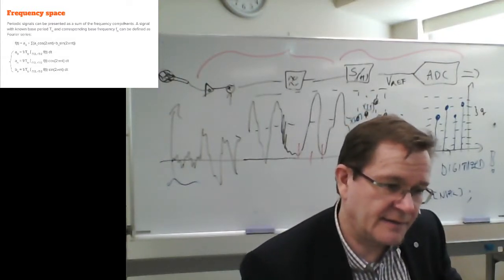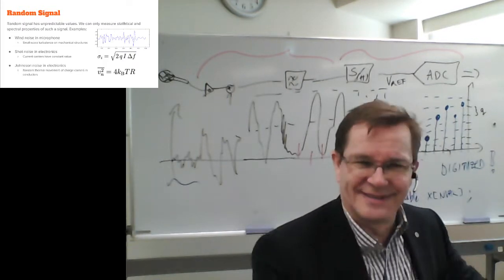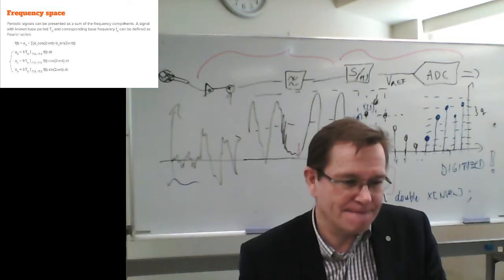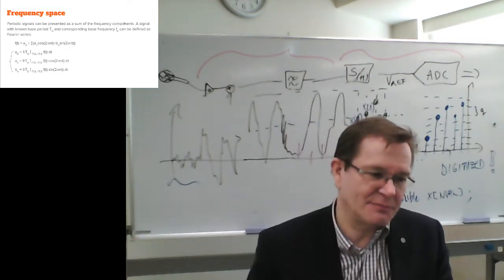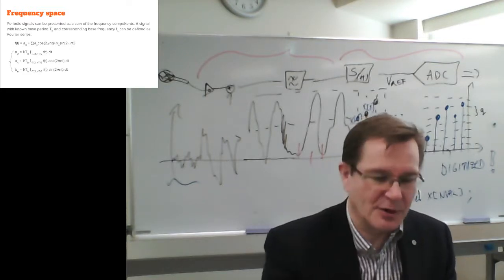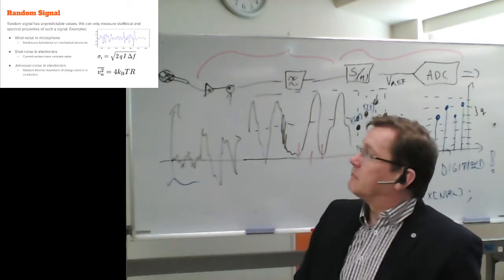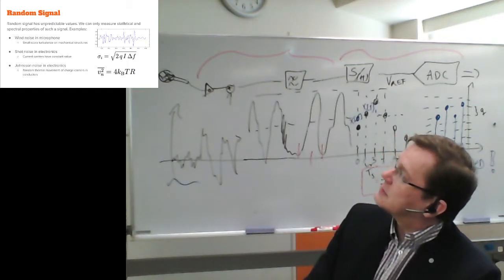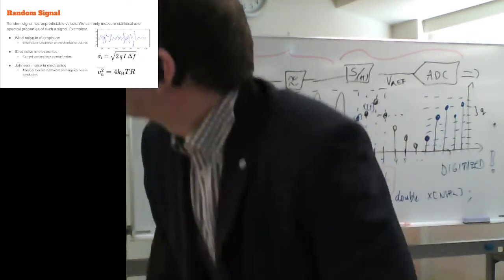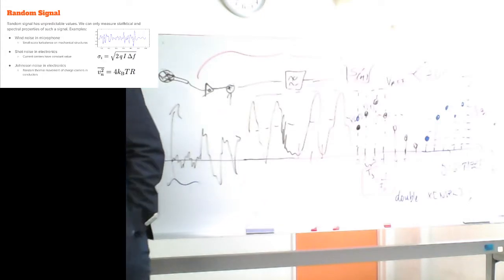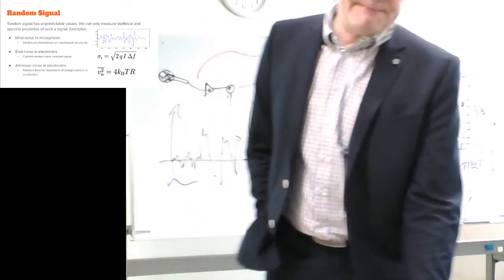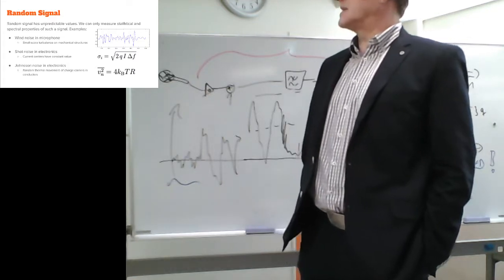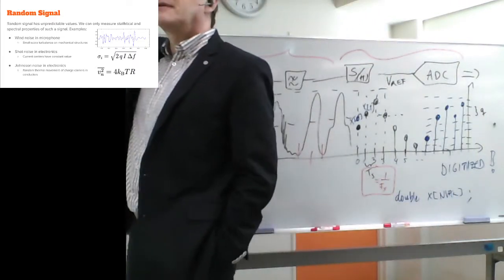For Fourier series — which you've seen — when you have a periodic signal you can represent it as frequency components. Random signals are actually quite natural, so we go through and analyze those signals and try to reduce noise.